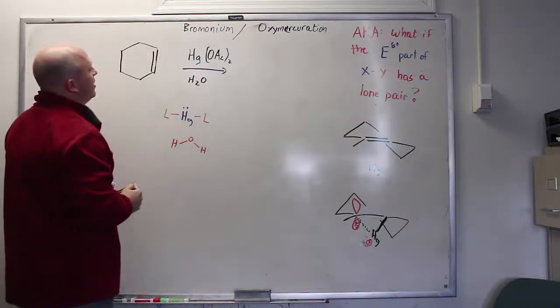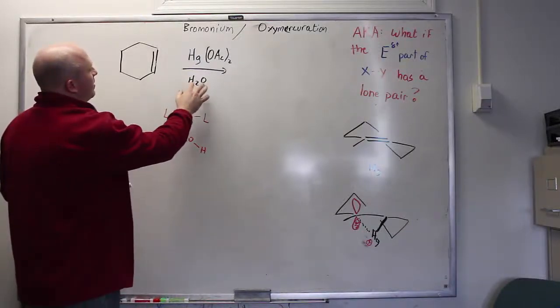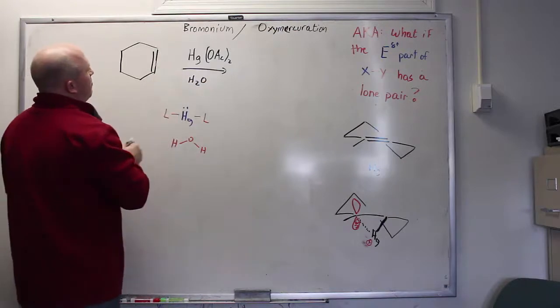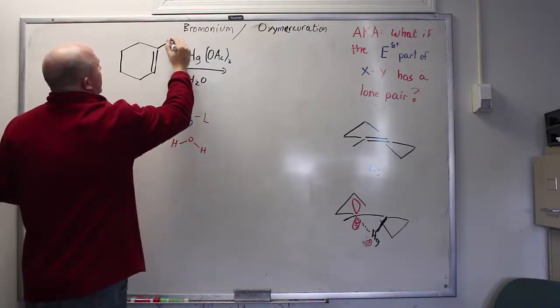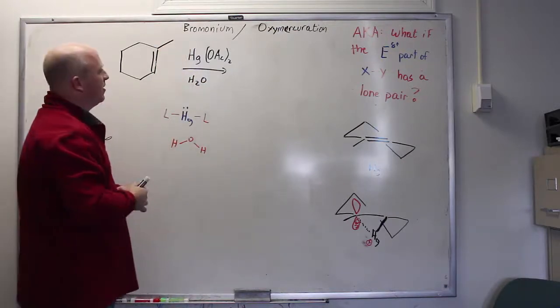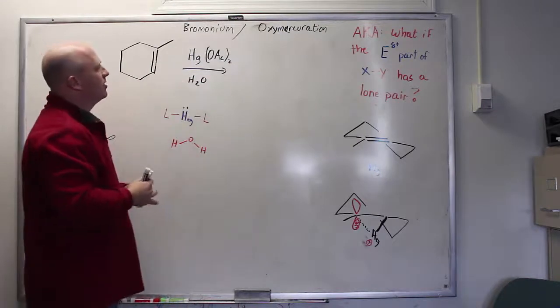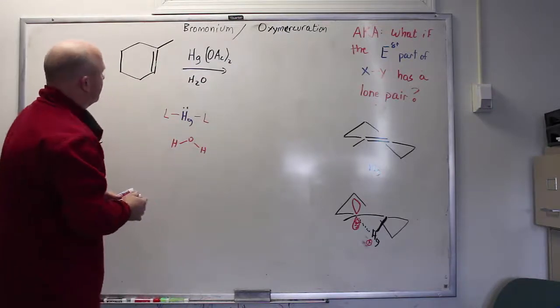I've already briefly discussed oxymercuration in the presence of methanol as the solvent and without a methyl at this position. But since we've already done the simple case, the mechanism is very similar either way, so I thought I'd go ahead and illustrate oxymercuration with the more complex case from the outset.